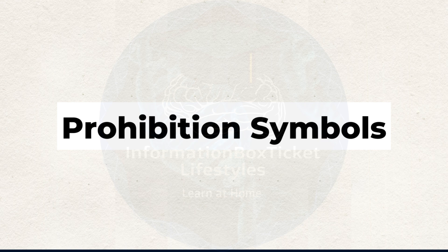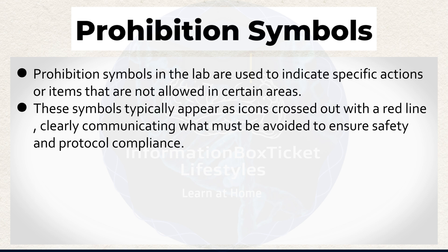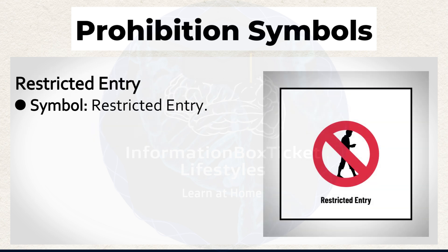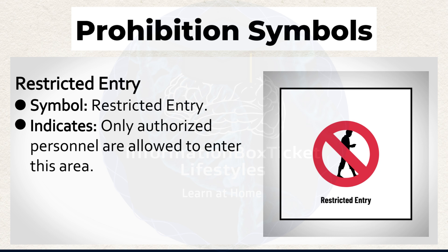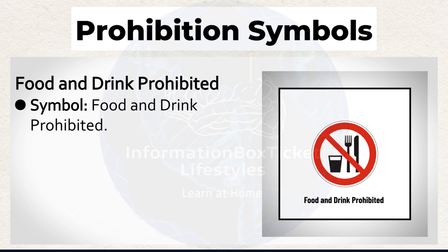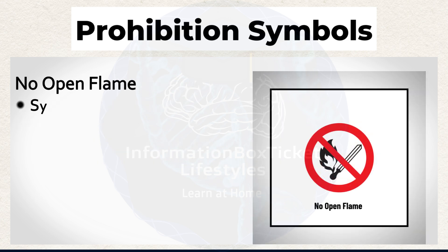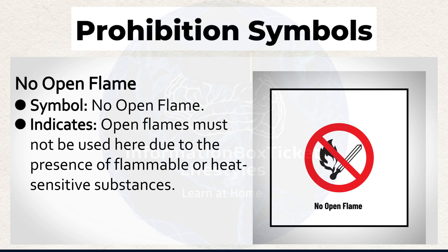E. Prohibition symbols in the lab are used to indicate specific actions or items that are not allowed in certain areas. These symbols typically appear as icons crossed out with a red line, clearly communicating what must be avoided to ensure safety and protocol compliance. Restricted Entry symbol indicates that only authorized personnel are allowed to enter this area. Food and Drink Prohibited symbol indicates that eating or drinking is strictly not allowed in this area. No Open Flame symbol indicates that open flames must not be used here due to the presence of flammable or heat-sensitive substances.